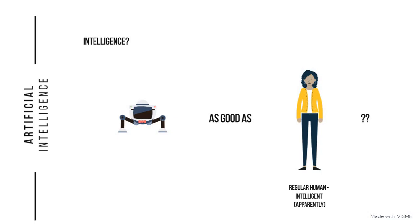A natural question you might be asking is: what happens if a machine turns out to be better than a human? In which case, we call it super intelligence, and this hasn't been achieved yet. I haven't been aware of any instance in which a machine has been able to approach human-level intelligence. And when we talk about a human being, we mean an average human being, not some kind of super genius, or on the other end of the bell curve of IQ.